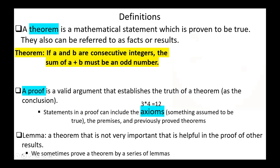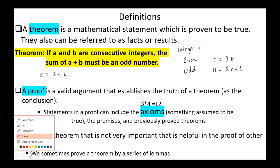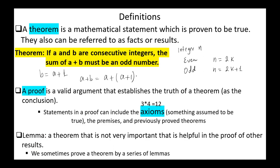First, definitions. A theorem is a mathematical statement which is proven to be true. They can also be referred to as facts or results. Example of a theorem: if A and B are consecutive integers, the sum A plus B must be an odd number. The integer n is even if there exists an integer k such that n equals 2k, and the integer n is odd if there exists an integer k such that n equals 2k plus 1. Two integers A and B are consecutive if B equals A plus 1. So the sum A plus B equals A plus A plus 1, which is 2a plus 1, and this is the form of an odd integer.